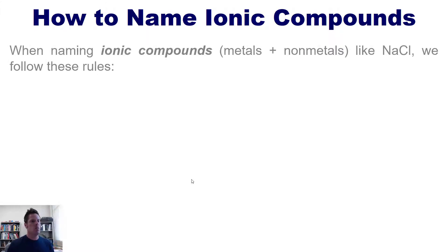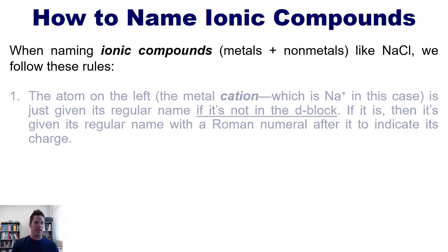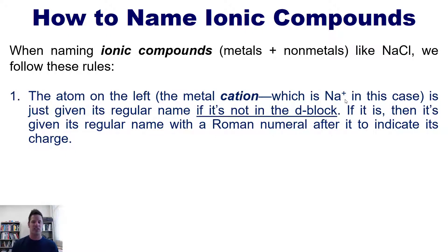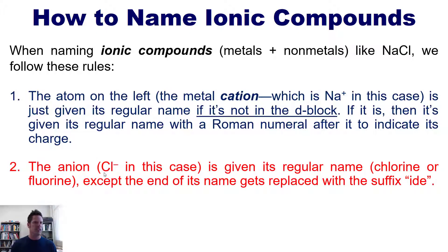So how do we name ionic compounds? Well, when naming ionic compounds, that is compounds that have metals and non-metals together, such as NaCl, we follow these rules. One, the atom on the left in our formula, which is the metal cation, in this case an Na+, is just given its regular name from the periodic table if it's not an element in the D block. Now if it is a D block element, then it's given its regular name plus a roman numeral after it to indicate its charge in our formula. Two, the anion in our formula, in this case Cl minus, is given its regular name, such as chlorine or fluorine, whatever anion you're dealing with here, except the end of its name gets replaced with the suffix "-ide". So in the case of chlorine, we wouldn't call it chlorine when it's in a compound and we're trying to write down the name, we would instead call it chloride, indicating that it has a negative charge. So the name of NaCl is sodium chloride.